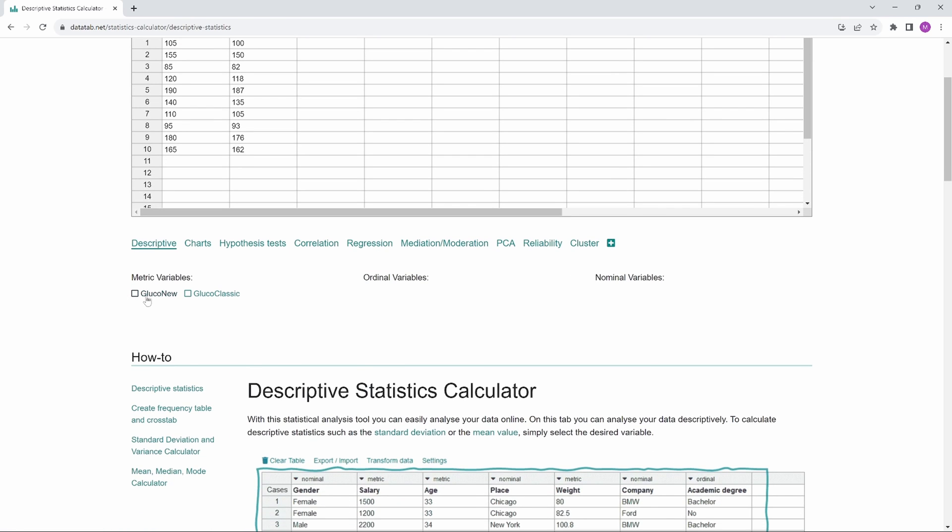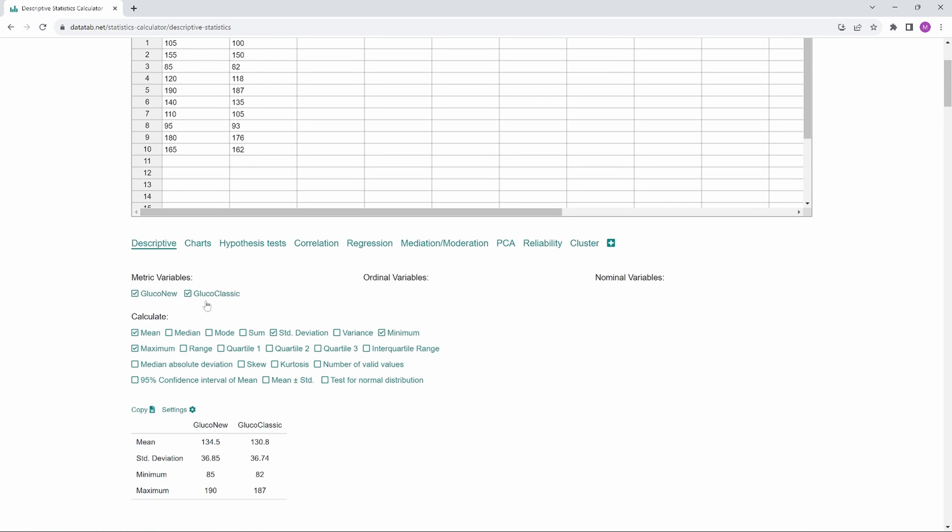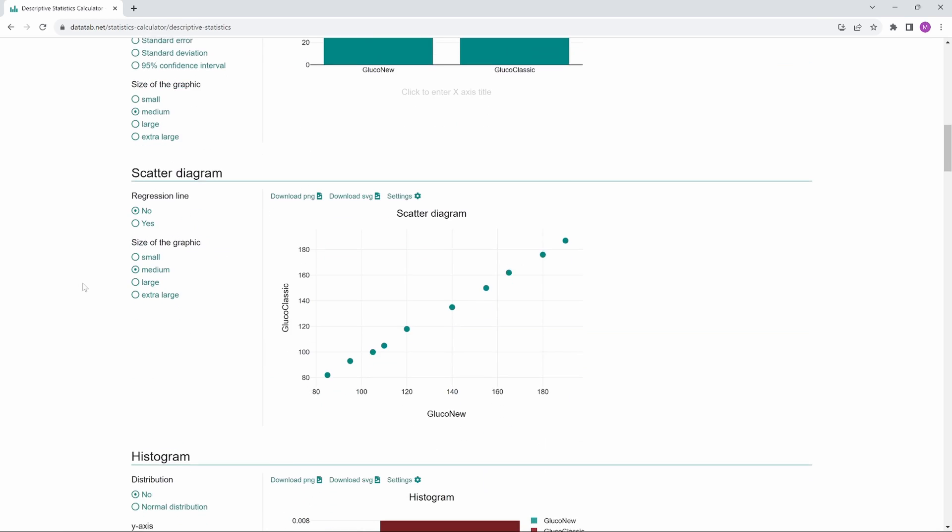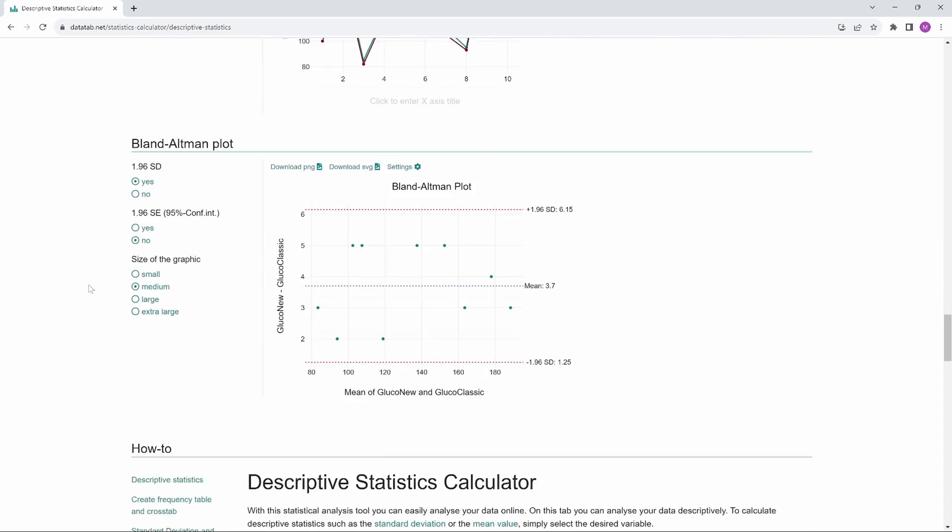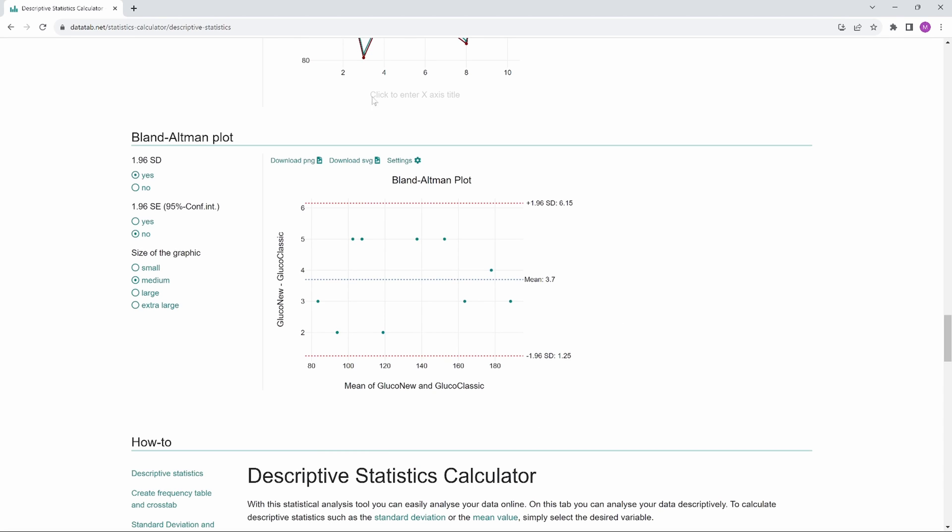Then simply select your two metric variables. If you now scroll down, you will be presented with many charts that could be suitable for the data, including the Bland-Altman plot. Thanks for watching and I hope you enjoyed the video!